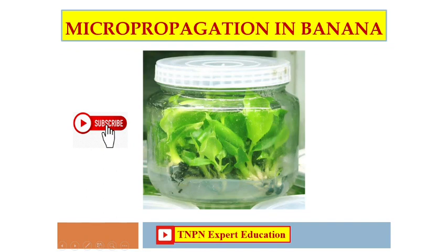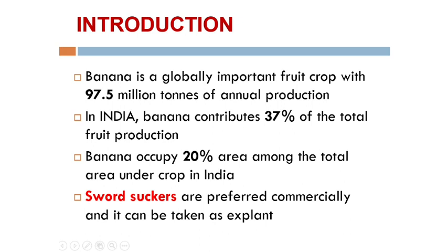Welcome to TNPN Expert Education. In this video, we are going to see about micropropagation in banana. Banana is a globally important fruit crop with 97.5 million tons of annual production. In India, banana contributes 37% of the total fruit production and occupies 20% of the area among the total area under crops.